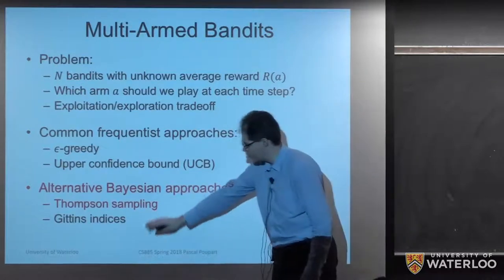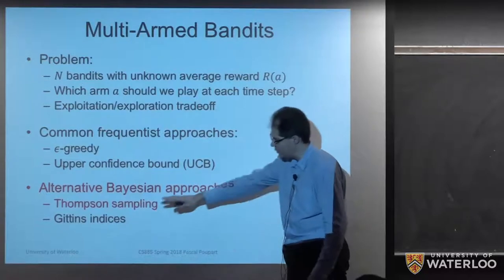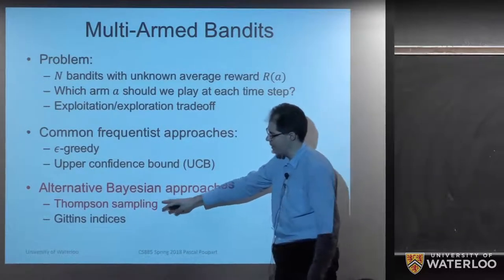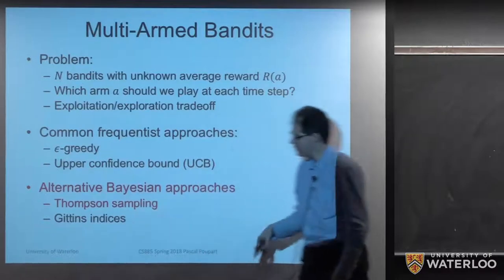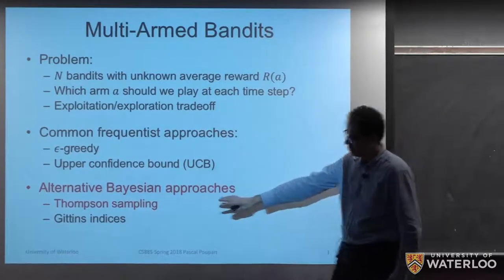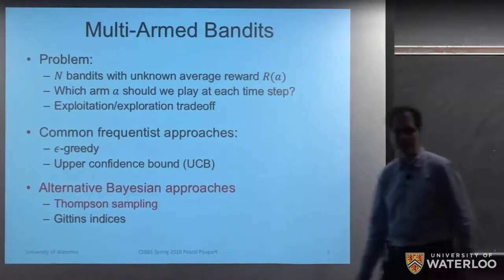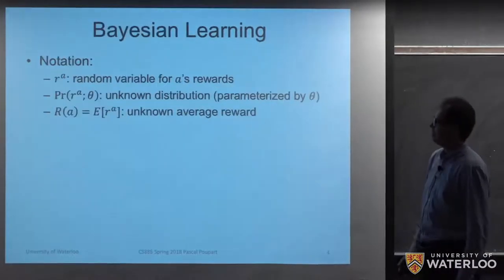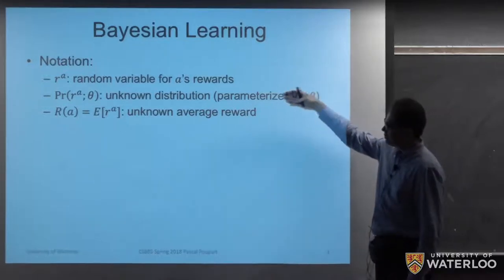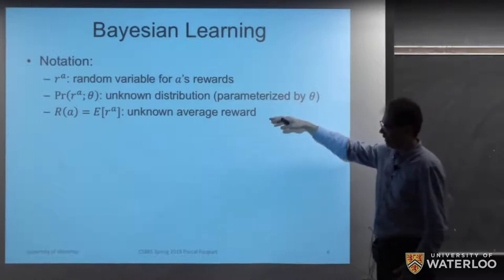There are various approaches in the Bayesian camp. We're going to talk about Thompson sampling, but historically there's another important one based on Gittins indices — though we won't have time to cover that.